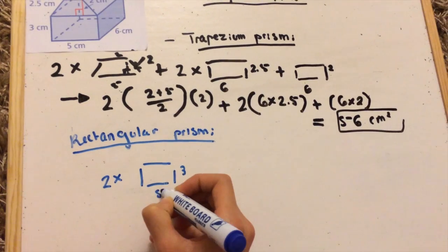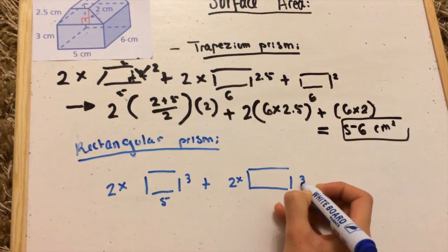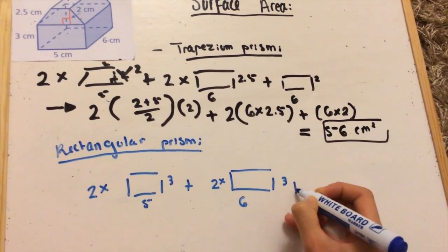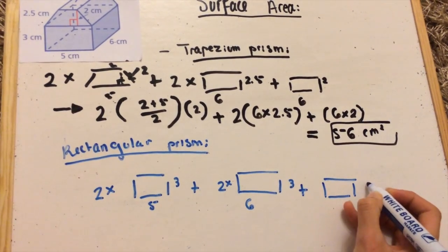So we write down our given measurements. Now we're not going to calculate the one on the top because that's internal, and it is not part of the surface area because it's not on the surface.